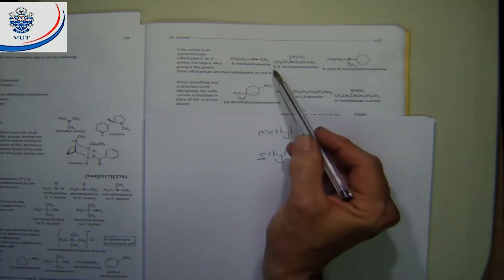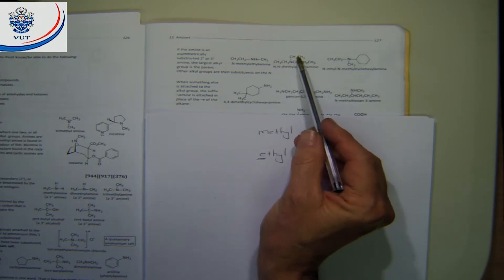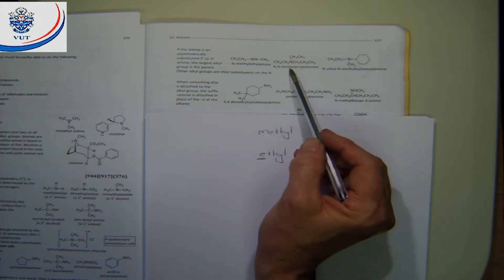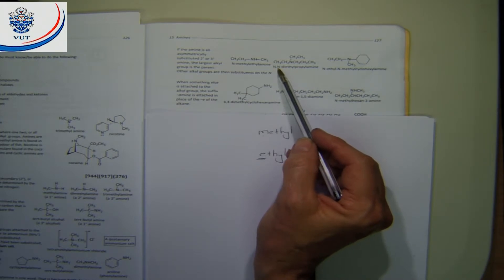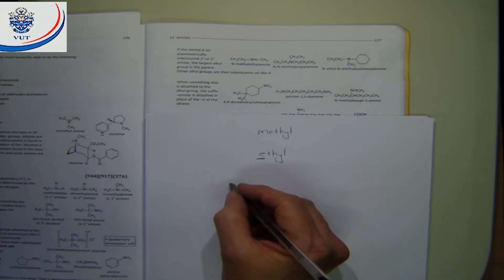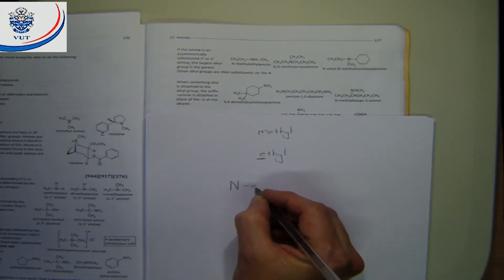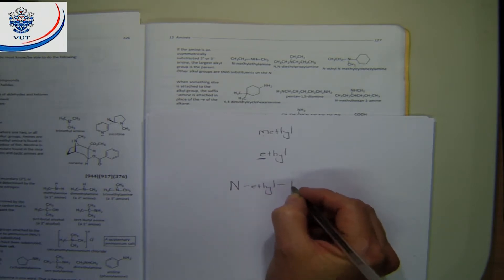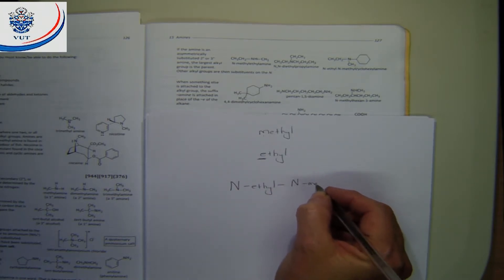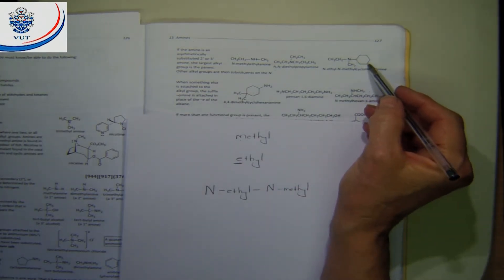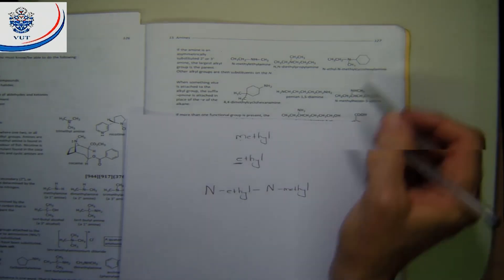You cannot put N,N together as we did before, because here the two substituents are different things — unlike the diethyl case where both were the same. For this one you have to separate them and say N-ethyl, N-methyl, in alphabetical order as we are used to doing. Then the parent chain is cyclohexyl, followed by the word amine.